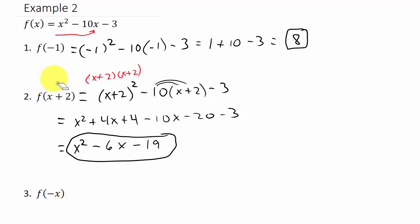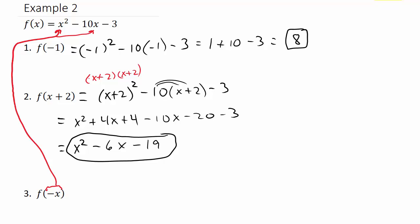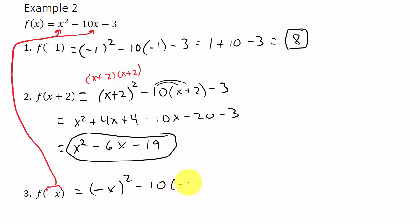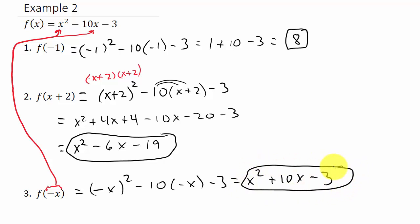For f of negative x, we take negative x and put it in for x. So we get negative x squared minus 10 times negative x minus 3. Negative x squared is positive x squared, and that gives us x squared plus 10x minus 3. Hopefully this video helped — thanks for watching!